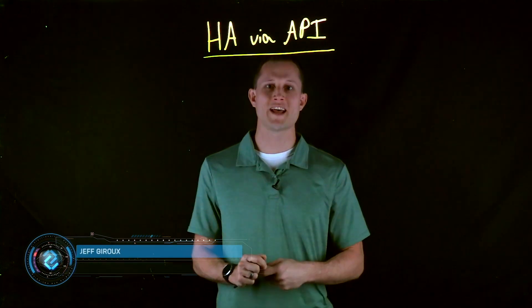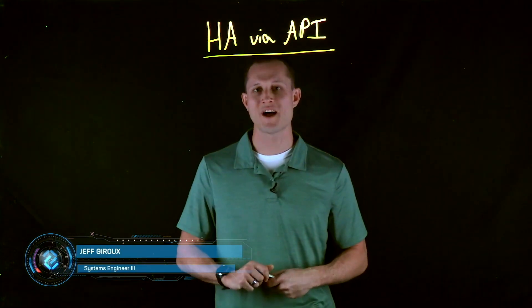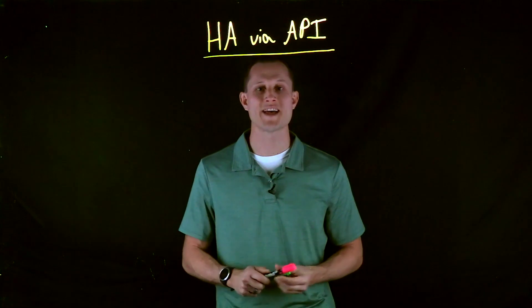Hello, this is Jeff Giroux again. Today I'm going to be covering the F5 failover method in Azure Cloud using HA via API.